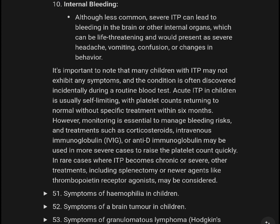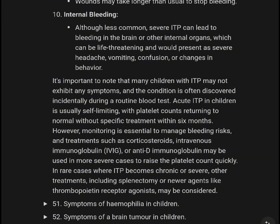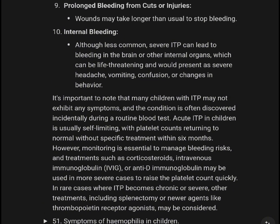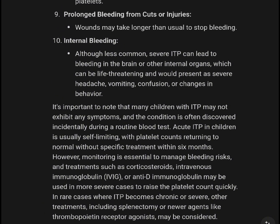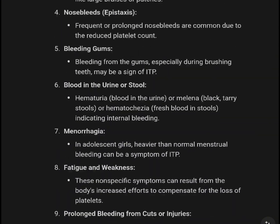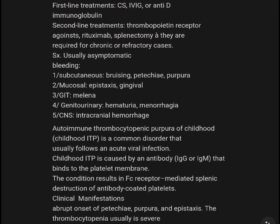In rare cases where ITP becomes chronic or severe, other treatments including splenectomy or thrombopoietin receptor agonists such as romiplostim or eltrombopag may be considered.